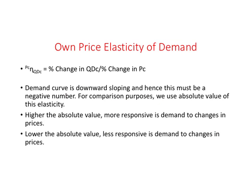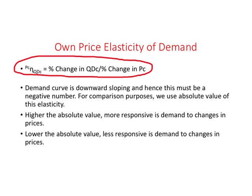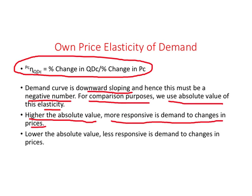Own price elasticity of demand is percent change in quantity demanded divided by percent change in price. The question we are asking is: by how much percent does demand change when price changes by one percent? We already know that the demand curve is downward sloping, and hence the elasticity number will always be negative. For comparison purposes, we will use the absolute value of elasticity. Higher the absolute value of elasticity, the more responsive quantity demanded is to changes in price. Lower the absolute value, the less responsive it is.